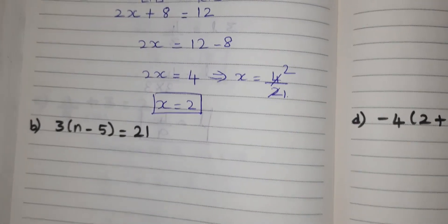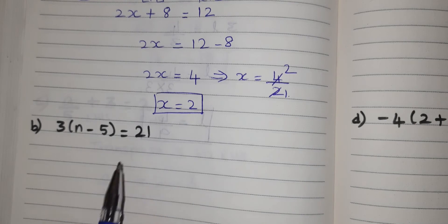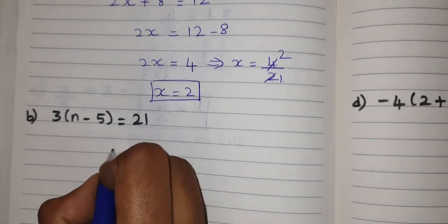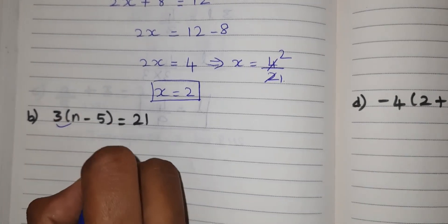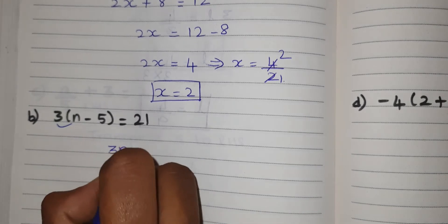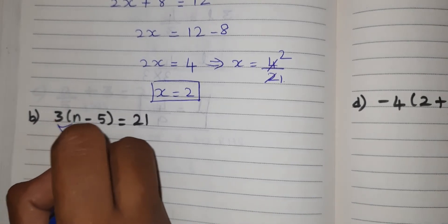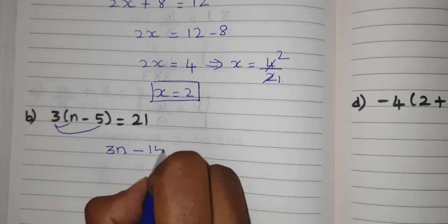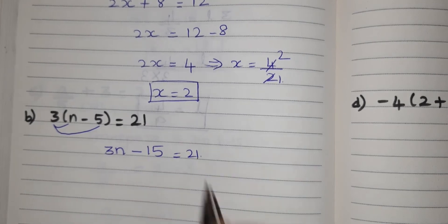Next problem: 3 into (n minus 5) equal to 21. Let's remove the bracket. Multiply 3 into n — that is 3n. The symbol here is minus, so multiply 3 into 5 — 3 fives are 15. So we have 3n minus 15 equal to 21.